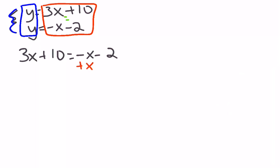So plus x to both sides, that gives me 4x plus 10 equals negative 2, and now we have a two-step equation.